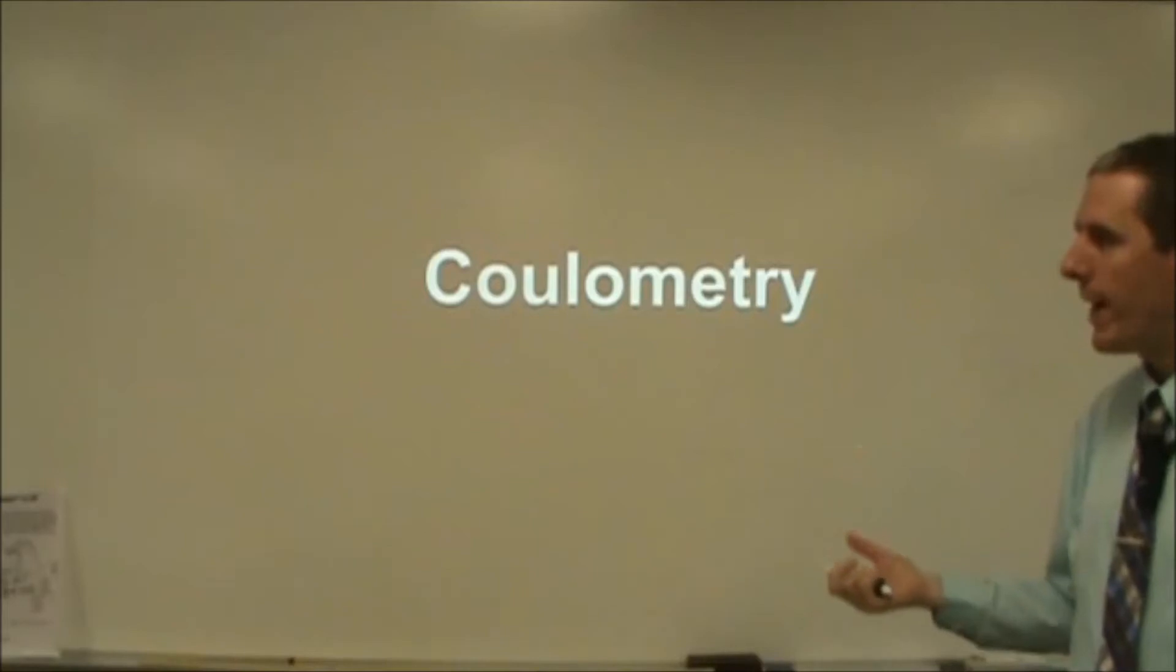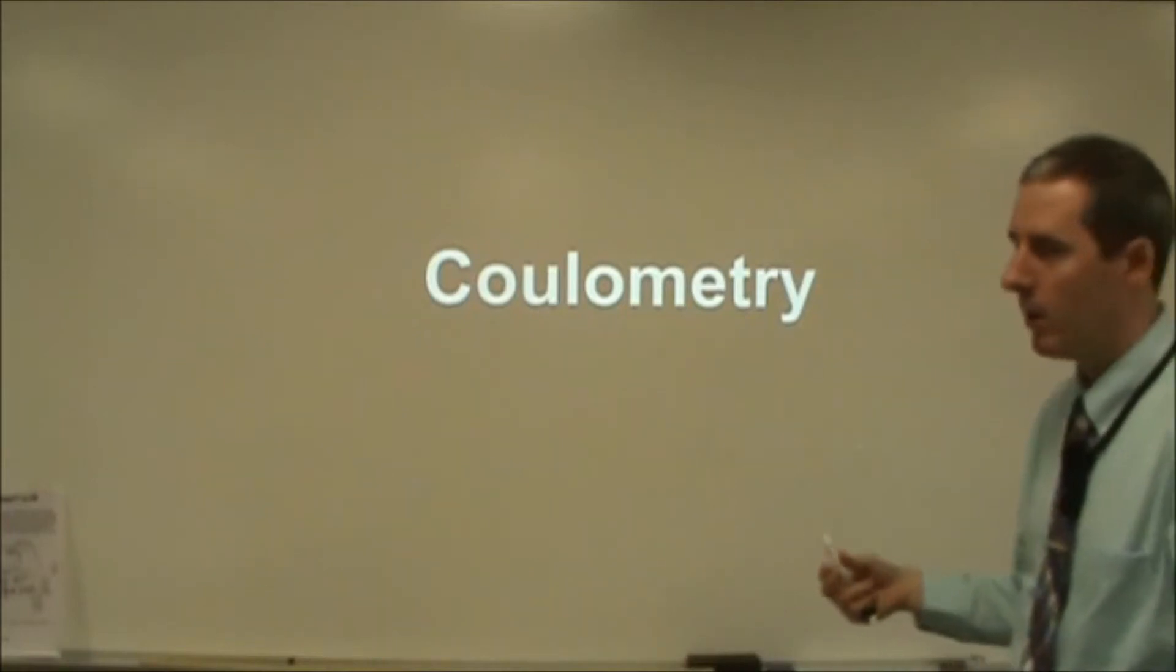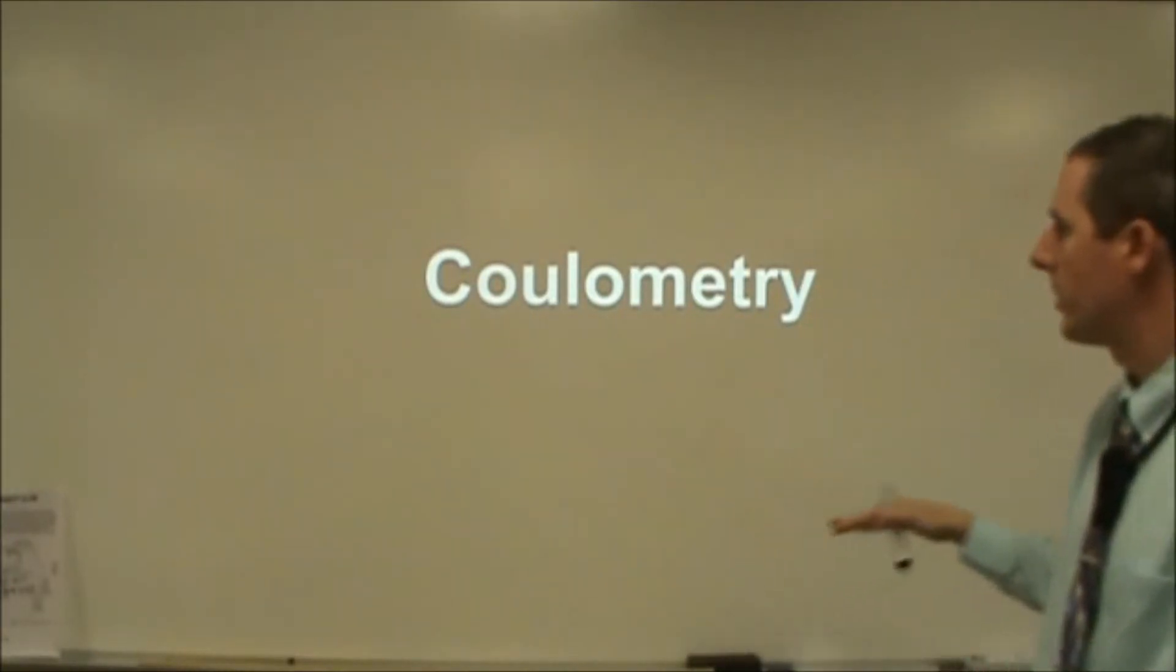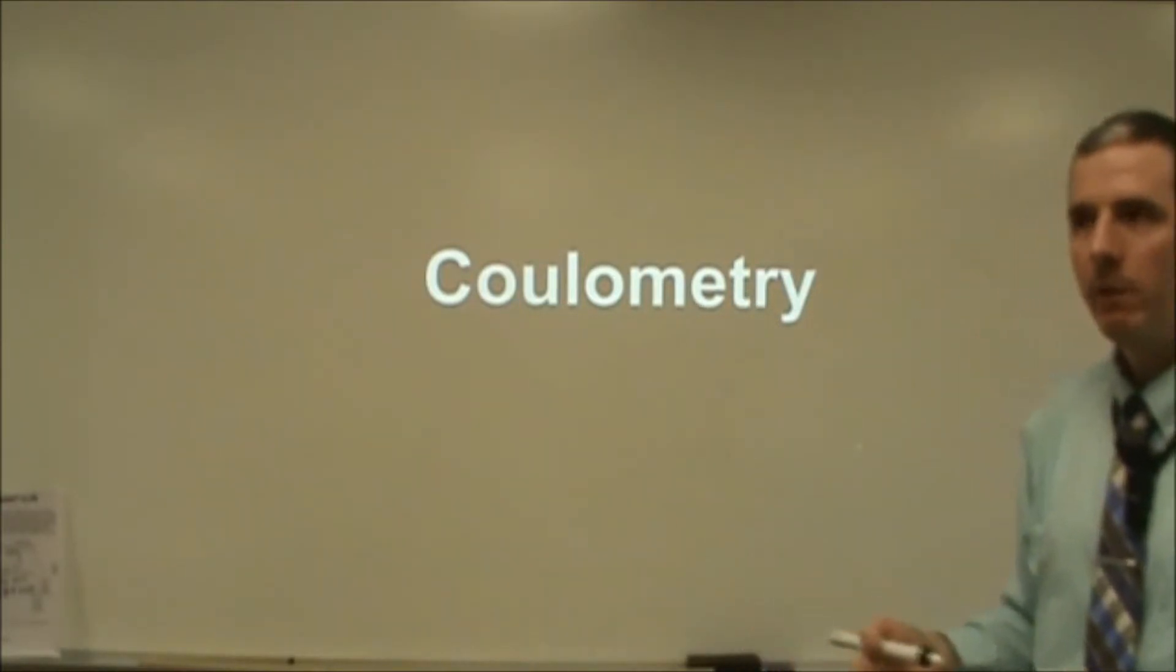Coulometry is when we're doing a reaction where we're looking at a quantitative amount of product done through electrolysis. So we're running an electric current through a solution, we're producing some type of metal or some other chemical through a redox reaction and we want to know the quantitative amounts.